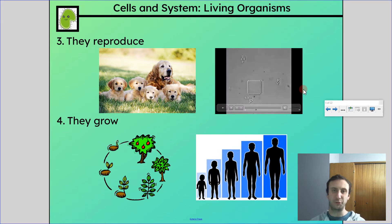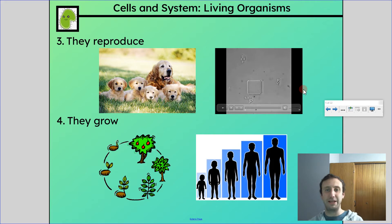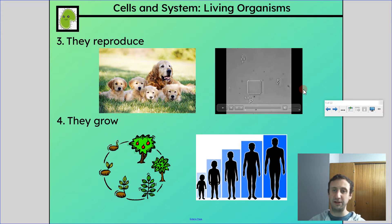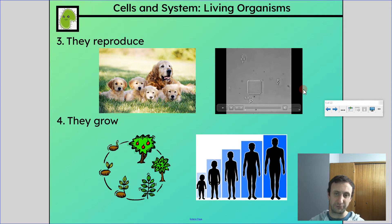All living things reproduce — otherwise they would no longer be in existence. Everything that's living has offspring that is made. Reproduction can be either sexual, which means it involves two individuals, or asexual, which means it involves only one individual to make that offspring.